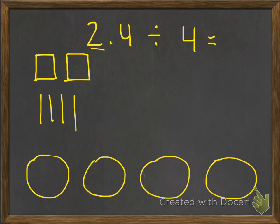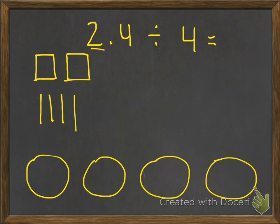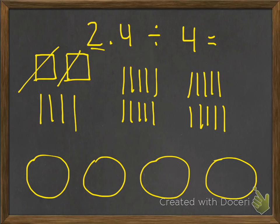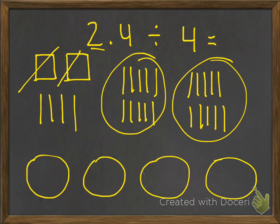I start with my largest pieces — my whole numbers. I'm not able to share these whole numbers equally into the four groups, because only two of the groups would have a whole and the other two would not. So we need to regroup: take the first whole away and replace it with 10 tenths, then take the second whole and replace that with 10 tenths as well. Now that we've regrouped the two whole numbers, we have 20 tenths from those two wholes, plus the original 4 tenths, giving us a total of 24 tenths.